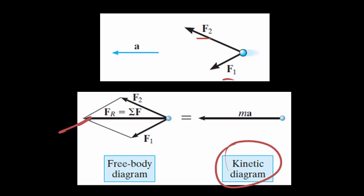Now ma is sometimes called the kinetic diagram, and it's just a vector in the direction of a with magnitude m times a.